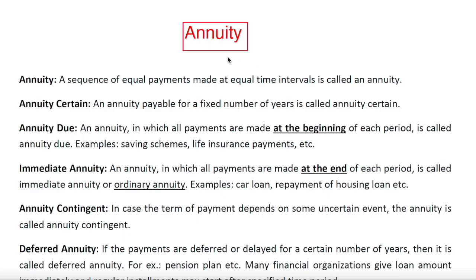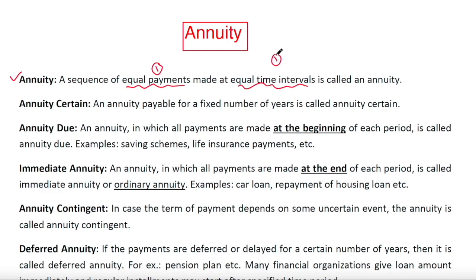This is the third part of this chapter and the topic for this part is annuity. An annuity is a sequence of equal payments made at equal time intervals. There are two important characteristics of an annuity: the payments should be equal, and the time interval should also be the same. Without maintaining these two characteristics, you cannot classify a problem as an annuity.